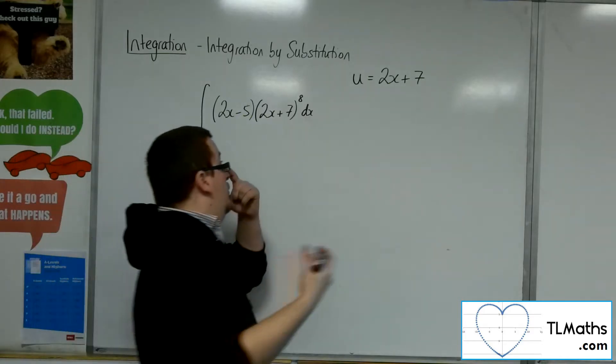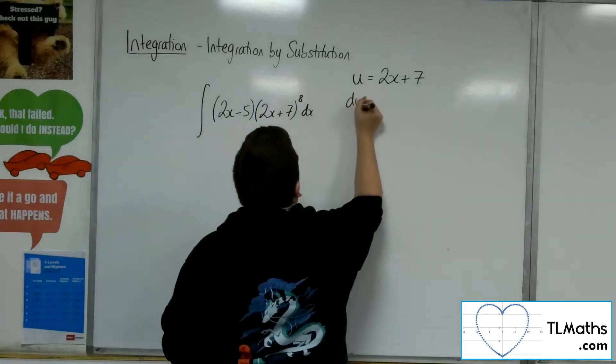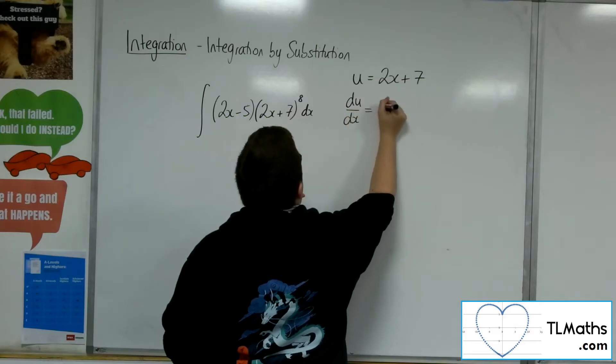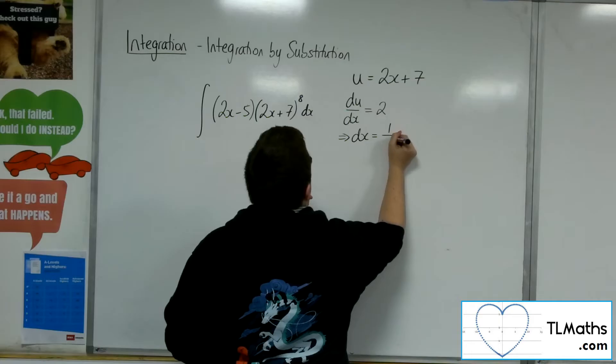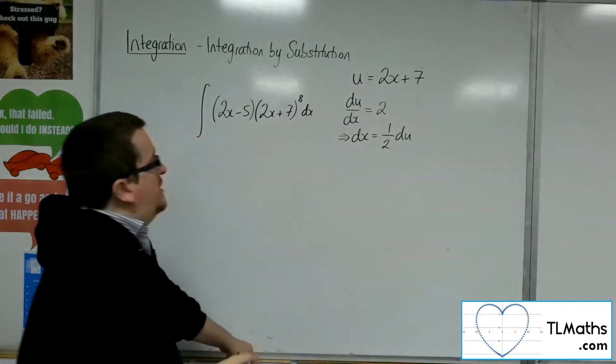First step, we differentiate. So du/dx is 2, and rearranging that gives dx equals 1/2 du.